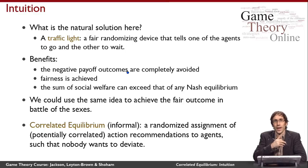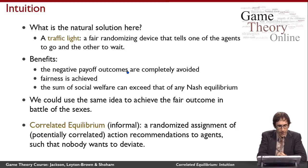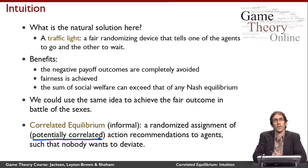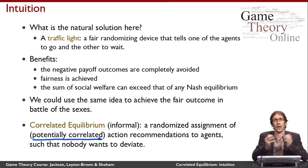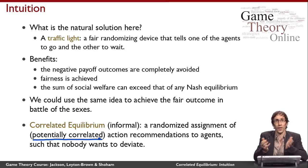Correlated equilibrium is a generalization of Nash equilibrium: if the action recommendations are not correlated at all, we simply get back to mixed strategies, so any Nash equilibrium can be captured this way. But we can also get new outcomes, like the fair ones we've just seen. It is a strict weakening of the Nash equilibrium concept — it includes strictly more things — and it can produce these kinds of nice, fair outcomes.